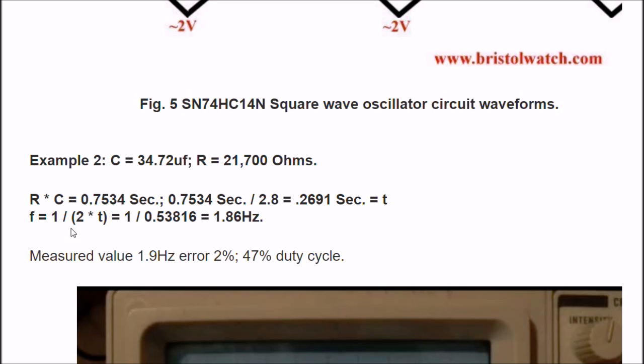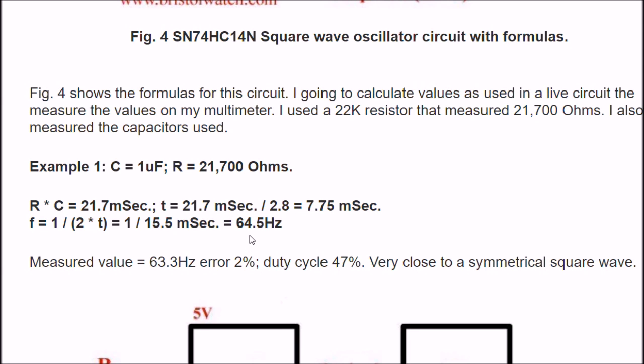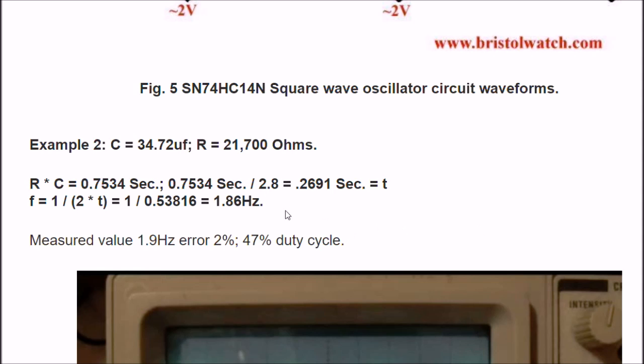Now we're going to get the frequency. I'm going to take 2 times T, and take the reciprocal of 2 times T. Well, 2 times T is 0.53816 seconds. Take the reciprocal of that value. It is 1.86 hertz. When I measured it on my frequency counter, and there's a limited resolution on that particular meter, I measured 1.9 hertz at a 47% duty cycle. I mean, you're not going to get much better than a 2% error. That's great. Now, you notice in the first problem, I had sort of a medium frequency of 64.5 hertz. This one is 1.86 hertz. Let's go for a higher frequency this time.